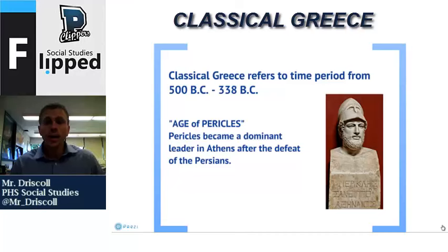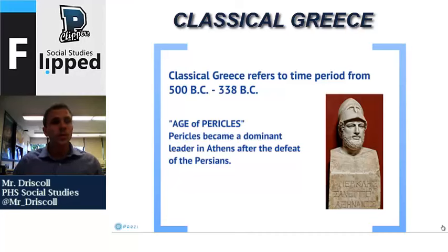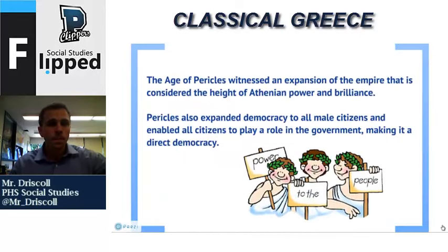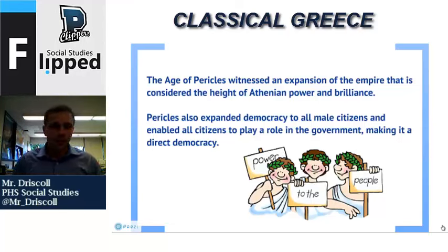Classical Greece refers to the time period from 500 B.C., which marked the defeat of the Persian Empire, to 338 B.C., which marks the takeover of the Greek Empire. Part of this era was also known as the Age of Pericles, who became a dominant leader in Athens after the defeat of the Persians. This age witnessed an expansion of the empire considered the height of Athenian power and brilliance, and is also known for the expansion of democracy to all male citizens, enabling them to play a role in government.